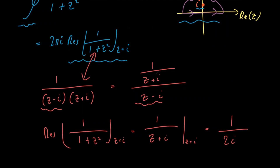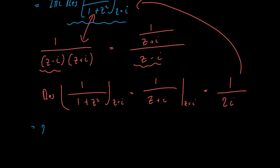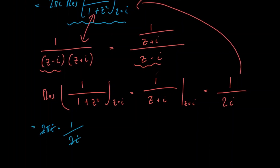Now we plug this into our expression. We have 2πi multiplied by 1 divided by 2i. The 2i's cancel and we get the same answer as before: π. Thank you very much for watching. I hope you found this content useful. If you did, could you please make sure to like and subscribe.